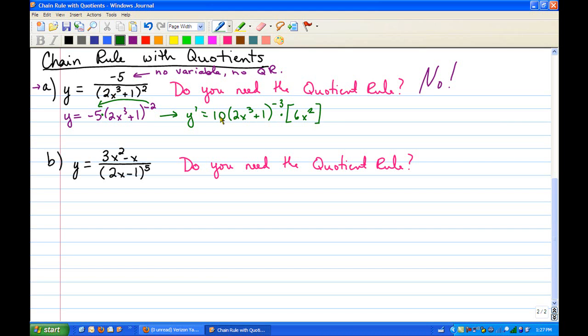So remember, you can't distribute through parentheses raised to a power, but we can multiply the positive 10 by the 6x squared. So that's going to give us 60x squared, and then we move this, because it has a negative exponent, down to the bottom and make the exponent positive.